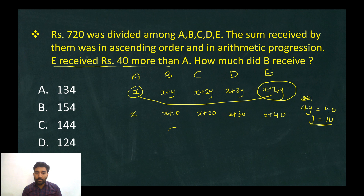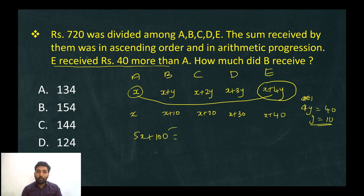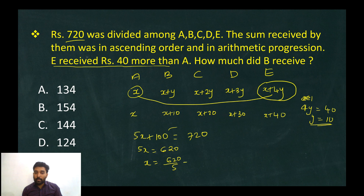The total is 5x plus 100 plus 0 equals 720, giving 5x plus 100 equals 720, so 5x equals 620, and x equals 124. Therefore b equals x plus 10, which is 134.